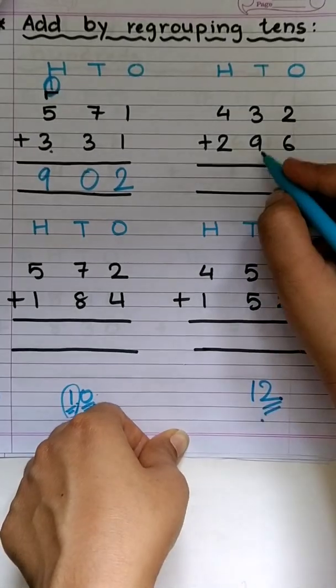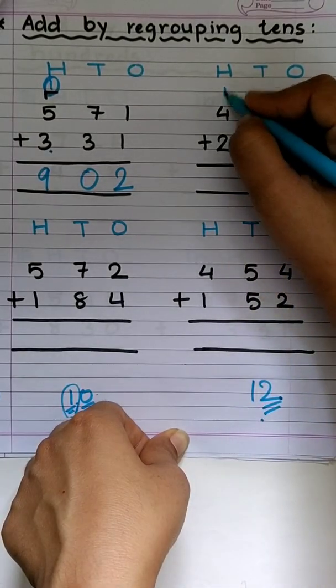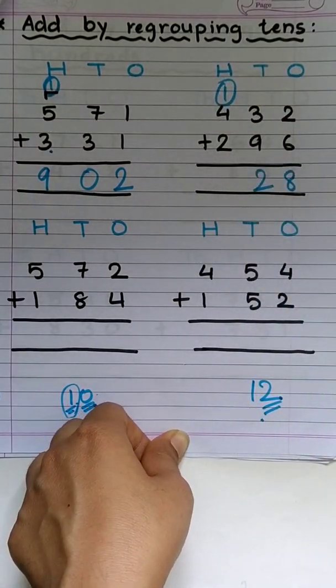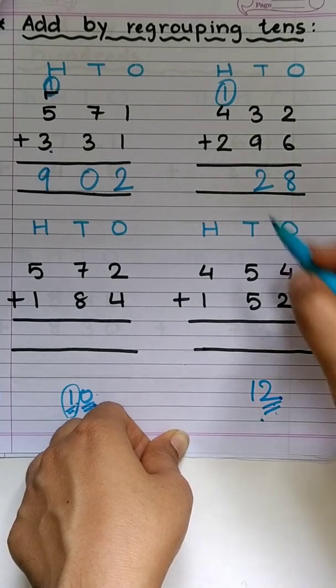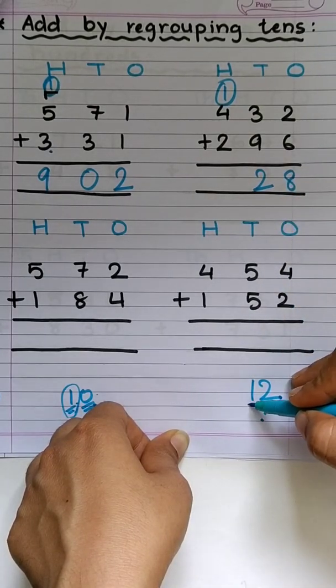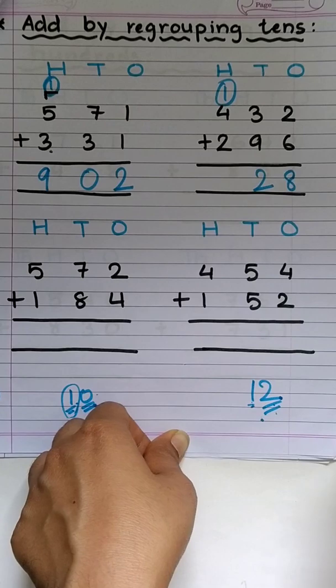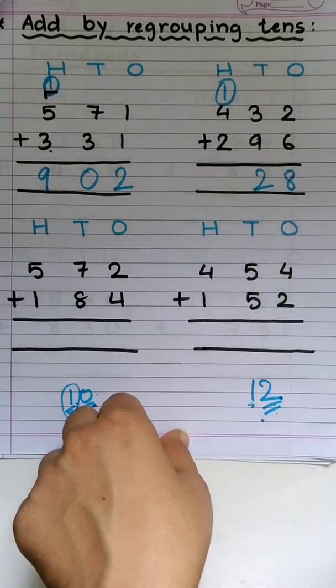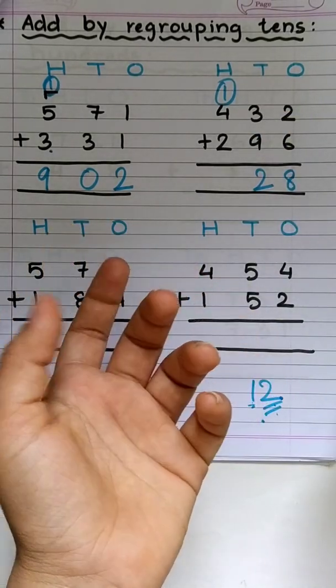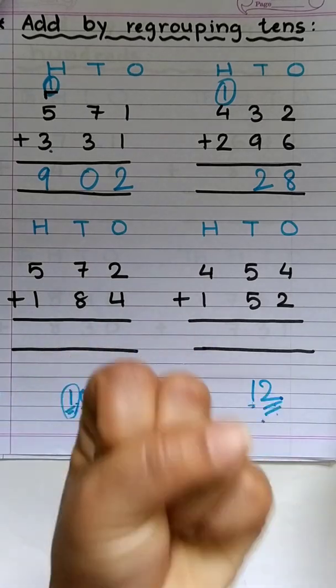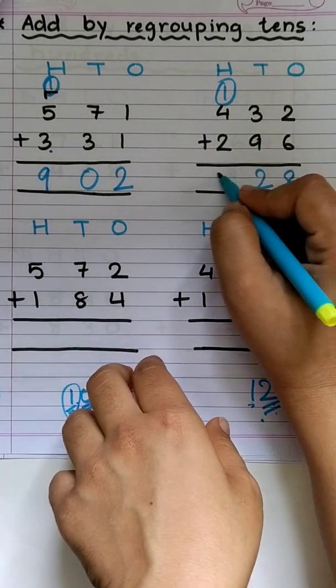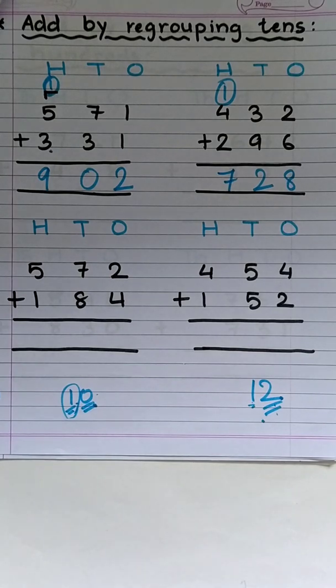So, you know, 2 will go down, 1 will go up. The digit at ones place will always go down. Digit at tens place will go up. So, 4 plus 1, 4 plus 1 is 5. So easy. And 5 plus 2, 6, 7. The answer is 728.